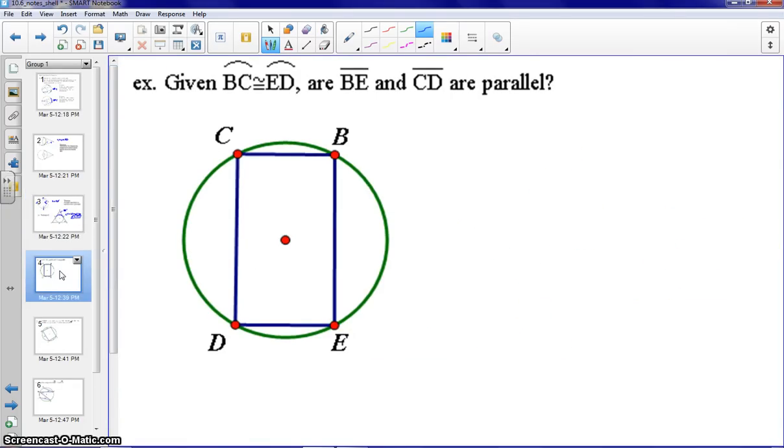Moving on to the next example. Let's mark our diagram here. So given that arc BC is congruent to arc ED, so we'll mark that on there. Can we prove that BE is parallel to CD? Segment BE parallel to segment CD. Well, let's draw something in here to help us out a little bit. Let's draw one of the diagonals.